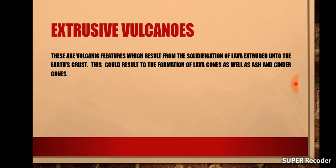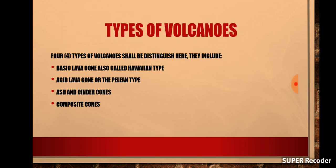So let us begin by looking at the various types of volcanoes. There are four basic types of volcanoes which we will try to explain here. They include acidic lava cones, also referred to as the Pelean type since they are very common around Mount Pelée. We'll talk about basic lava cones, also called the Hawaiian type or the shield volcano. We'll look at ash and cinder cones, as well as the composite cones. Now let's get started with the acidic lava cones.